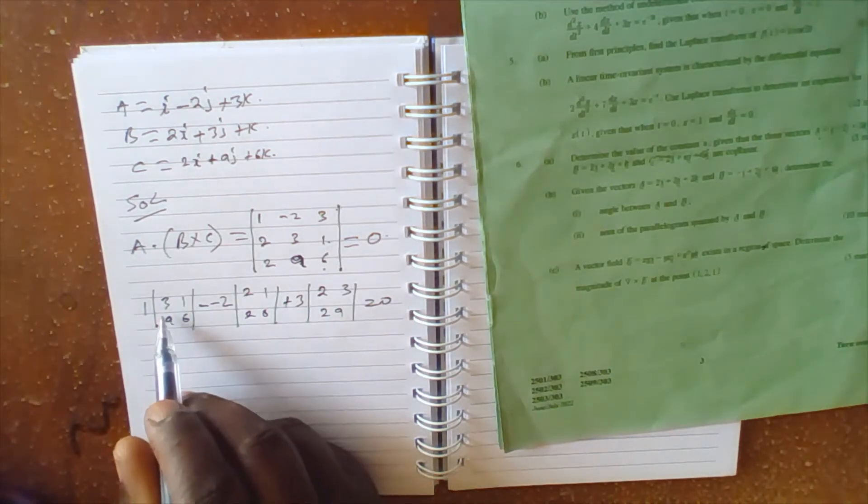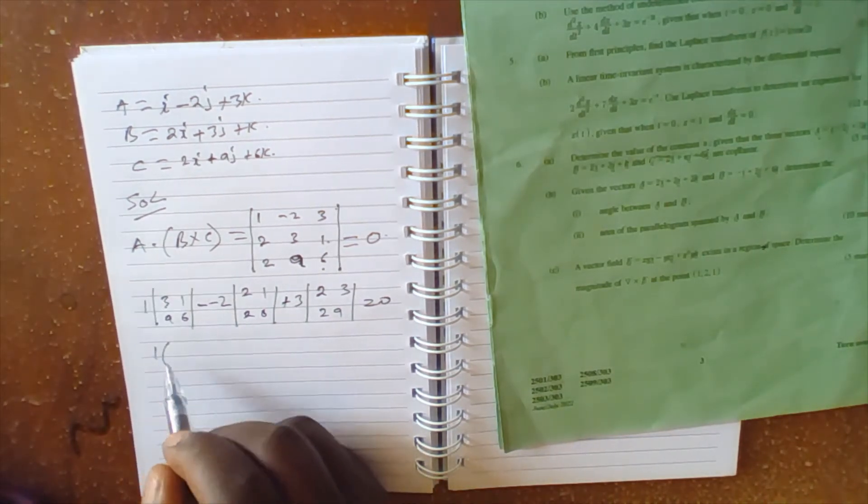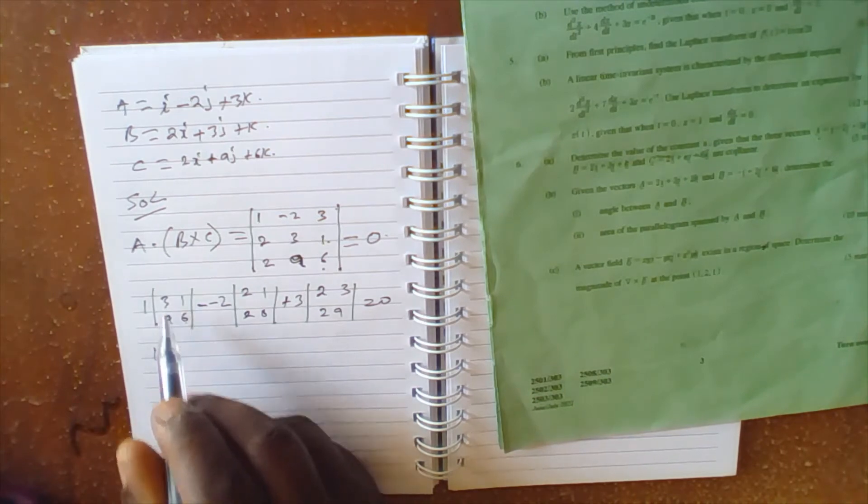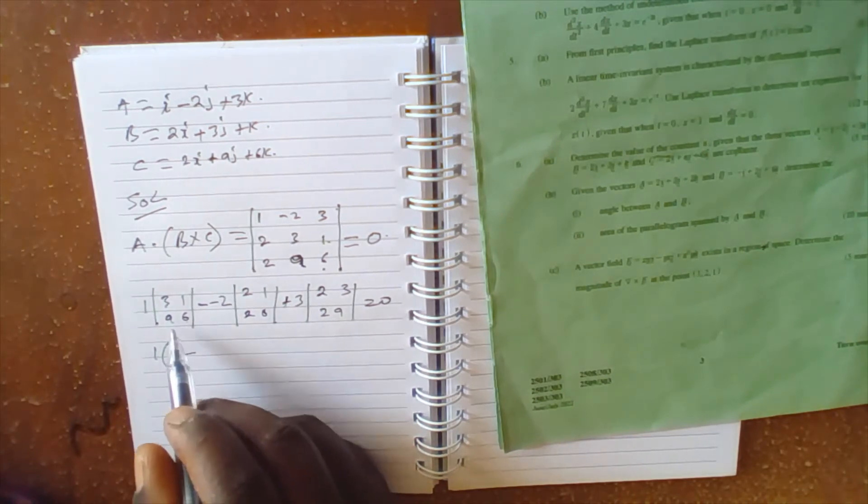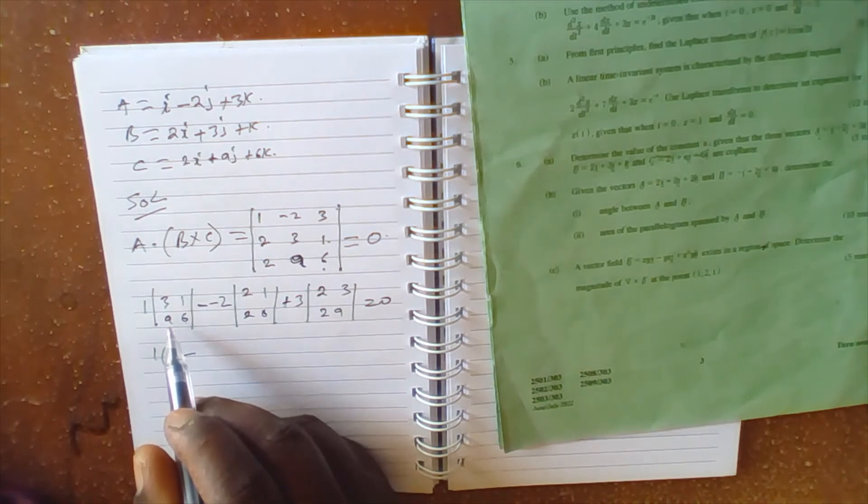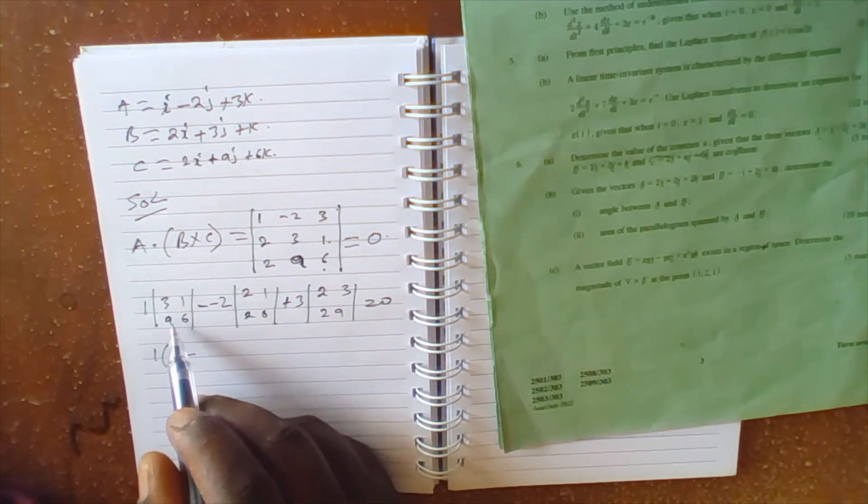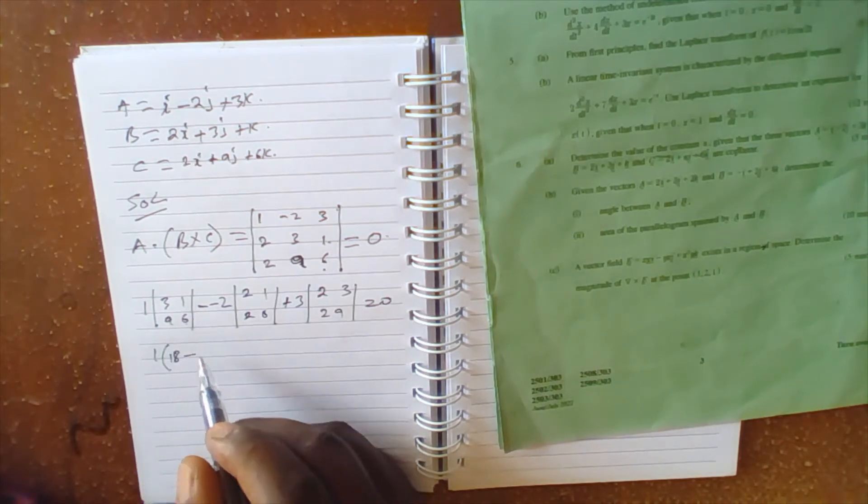So we expand this. Here we have 1 times (6 times 3 is 18, minus a times 1, we have a).